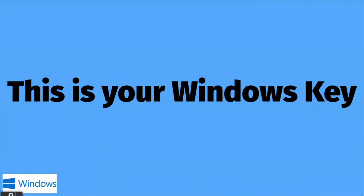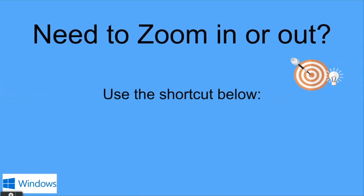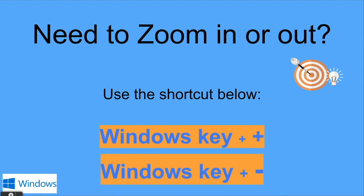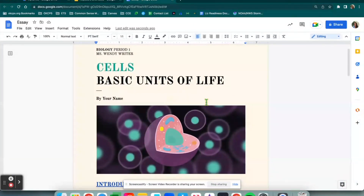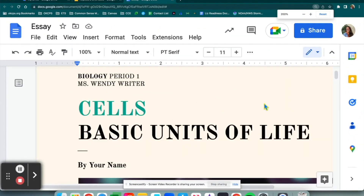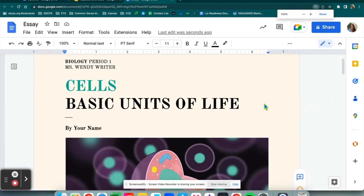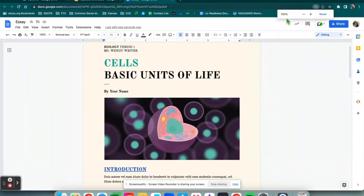Here we go with our bonus shortcuts. This is your Windows key — go ahead and look at your keyboard and identify where your Windows key is. I'm going to show you how to zoom in or out. Sometimes you may open a Google Doc, a Google Slide, or a page in your Google browser and it's too small to see. To zoom in, you're going to use the Windows key plus the plus sign. To zoom out, use the Windows key plus the minus. Say I'm in this Google Doc and it's too difficult to see — I'm going to click Windows button and plus. If I would like to zoom out, Windows minus. You will see the zoom percentages right up in your Chrome browser.